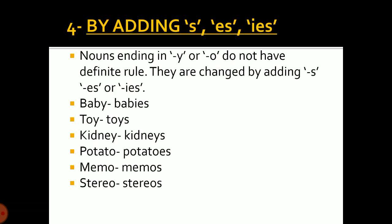The fourth rule involves adding es or ies as a suffix to make the noun plural. For all those nouns that end in y or o, they do not have a definite rule and are changed by adding es or ies accordingly. For example: the plural of baby is babies, the plural of toy is toys, the plural of kidney is kidneys, the plural of potato is potatoes, the plural of memo is memos, and the plural of stereo is stereos.